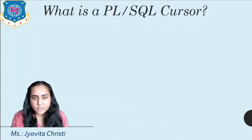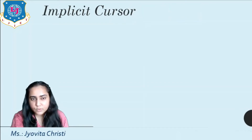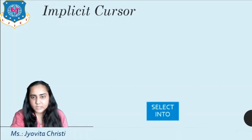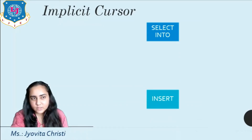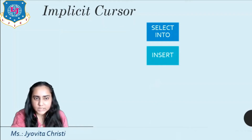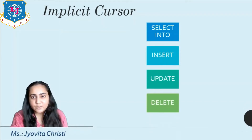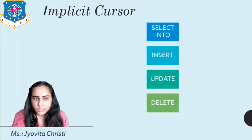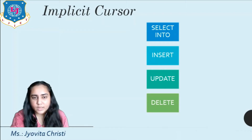Let's take a look at implicit cursors first. Whenever Oracle executes some SQL statement — for example a SELECT INTO statement, or an INSERT, UPDATE, or DELETE — it automatically creates an implicit cursor. This is not something you have to create; it's already created and internally manages the whole execution cycle.